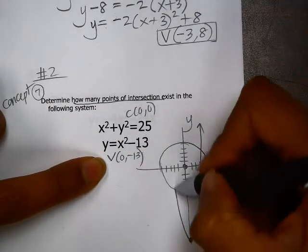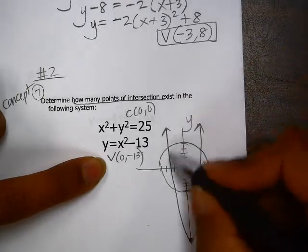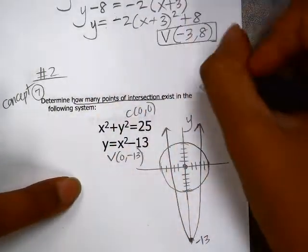So we can see here that this parabola has 1, 2, 3, 4 points of intersection.